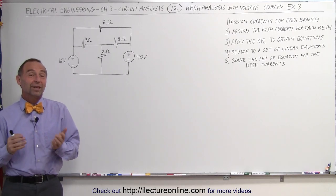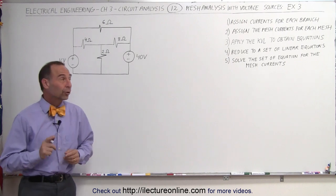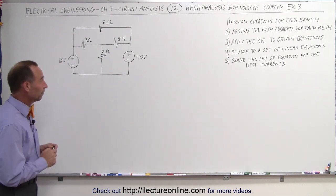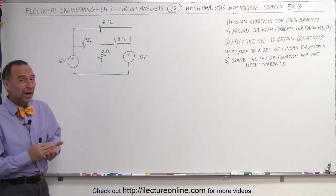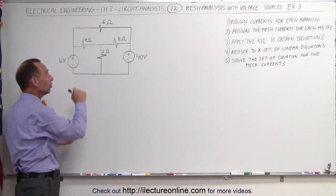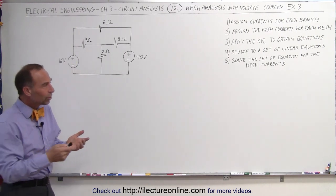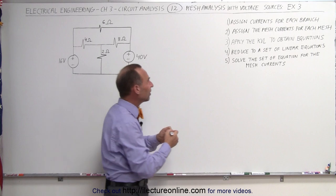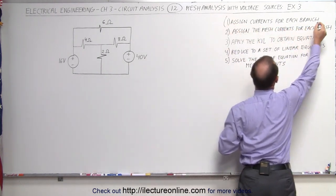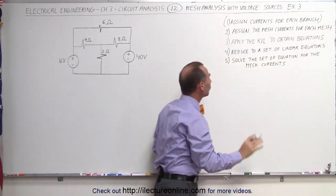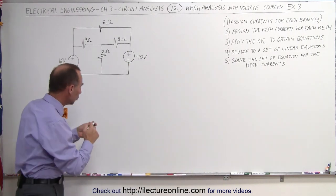Welcome to Electronline. Here's our next example of how to use the mesh analysis method to find the currents in the circuit. Step one would be to assign currents for each branch, but as we get more loops there are going to be a lot of branches. So we can leave that until the end and make it an optional step. We'll go directly to assigning the mesh currents for each of the meshes.